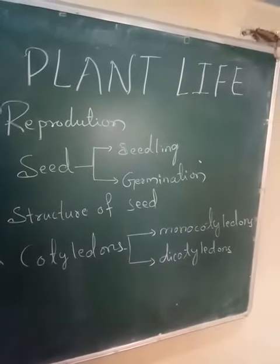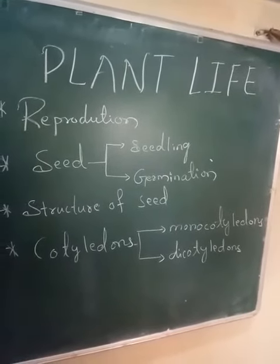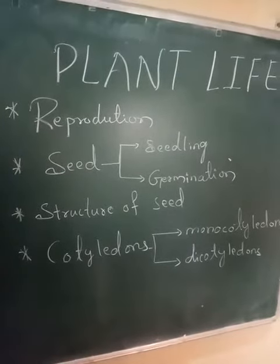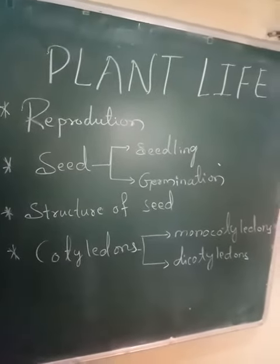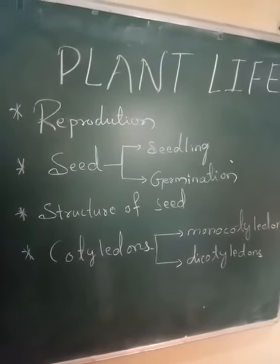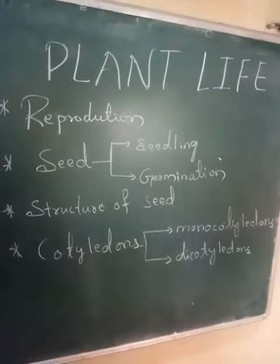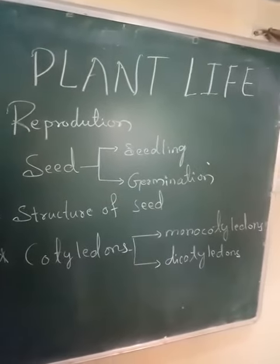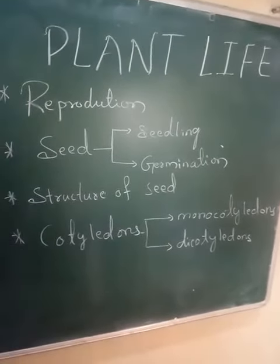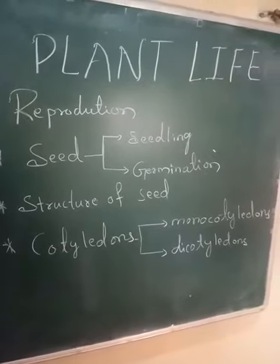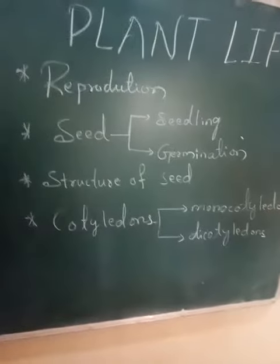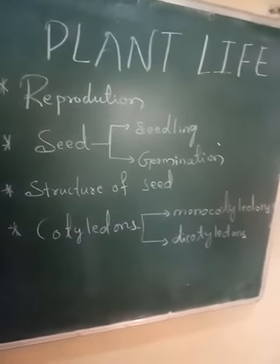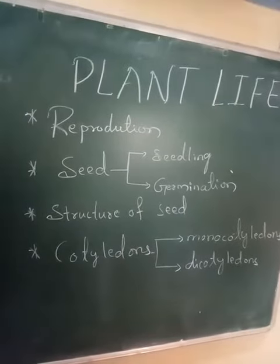After these two, we are learning about the structure of the seed. What is the structure of the seed? Seeds of some plants have monocotyledons and seeds of some plants have dicotyledons. These cotyledons are the leaf of the seeds.